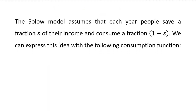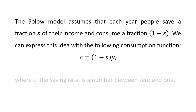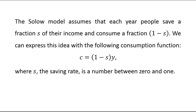The Solow model assumes that each year people save a fraction s of their income and consume a fraction 1 minus s. We can express this idea with the following consumption function: c equals 1 minus s times y, where s is the saving rate. The saving rate is a number between 0 and 1, and the saving rate equals saving divided by income.